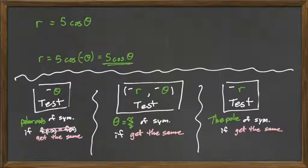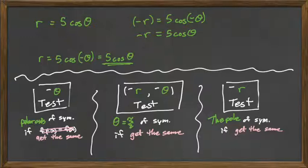What about the negative r negative theta test? Let's plug in those. So we have negative r, whoops, negative r and negative theta. So we have 5 cosine theta. Now the negative inside the cosine is going to go away. So just cosine, or 5 cosine theta. And this is a negative r. Is this the same as what we started with? No.